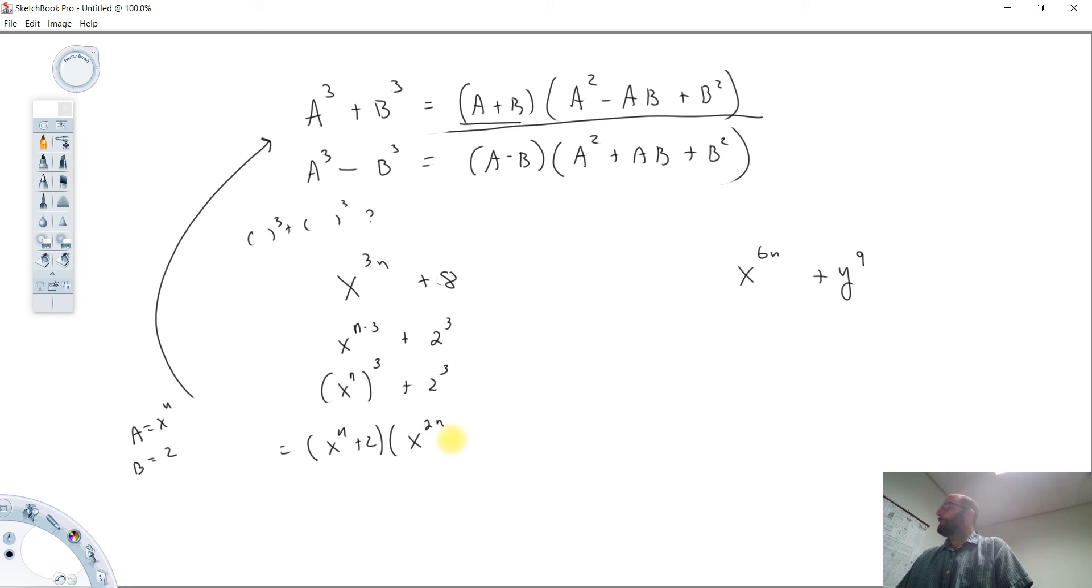minus a, b. I'm going to write the b first, if you don't mind. b times a, plus b squared.